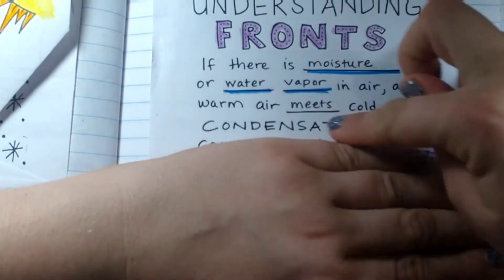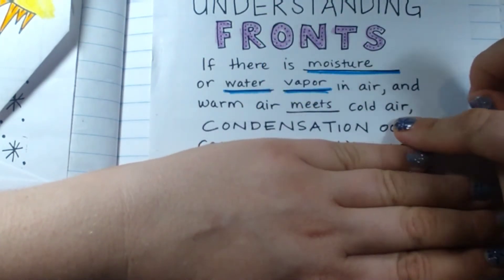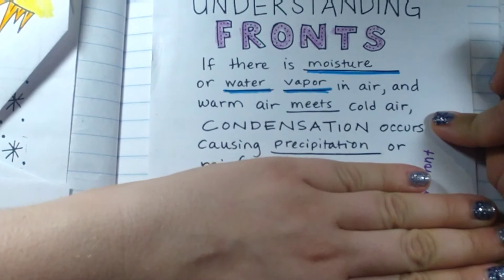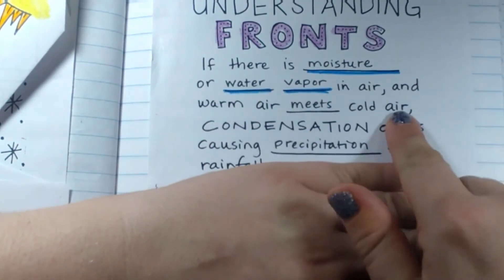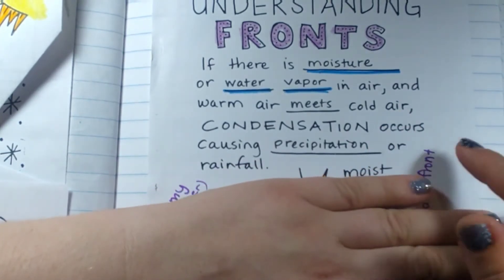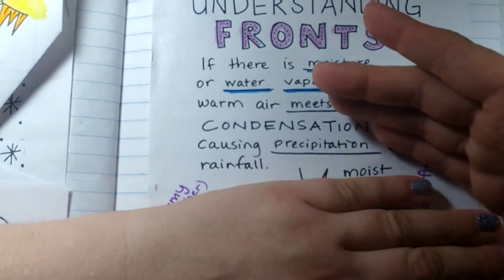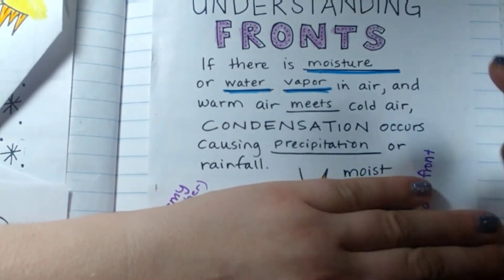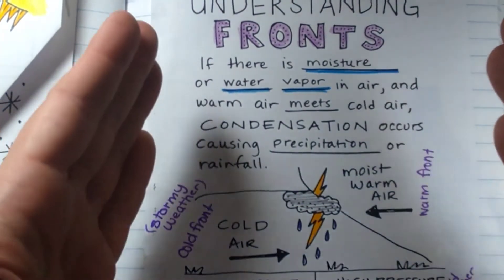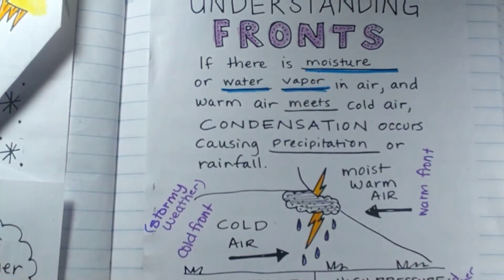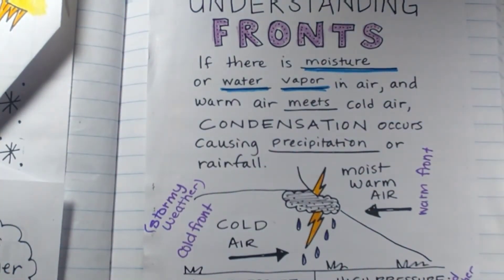Once that happens over a long period of time, it gets heavy and precipitation happens. So when something that is warm meets cold air, it causes it to rain because condensation occurs. And when there's too much in the clouds, the precipitation falls. That is how rain happens when we're talking about temperature.